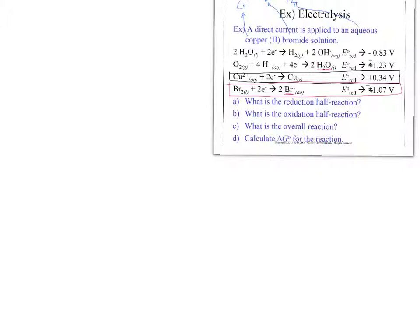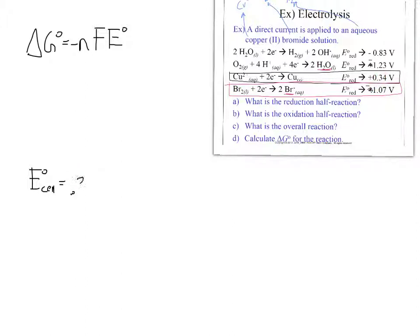Now let's calculate the delta G for this reaction. We need the cell voltage first. The copper reduction stays as written at 0.34 V; the bromine reaction was flipped, making it negative 1.07 V. Adding these gives a cell voltage of negative 0.73 volts — which again indicates a non-spontaneous reaction. That's why we have to use electricity to drive it.